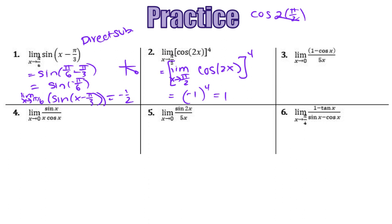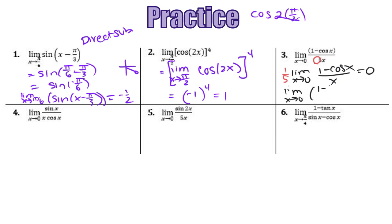Number 3: we learned the property that the limit as x approaches 0 of 1 minus cosine of x over x equals 0. All we need to do is move the 5 out: 1 fifth times the limit as x approaches 0 of 1 minus cosine of x over x. That limit is 0, and 0 times 1 fifth is 0. So the limit as x approaches 0 of 1 minus cosine of x over 5x equals 0.